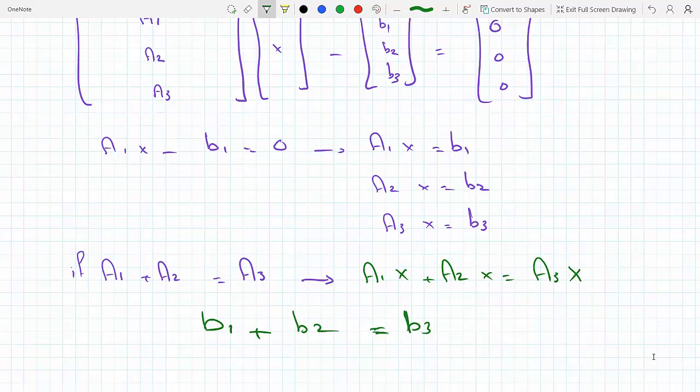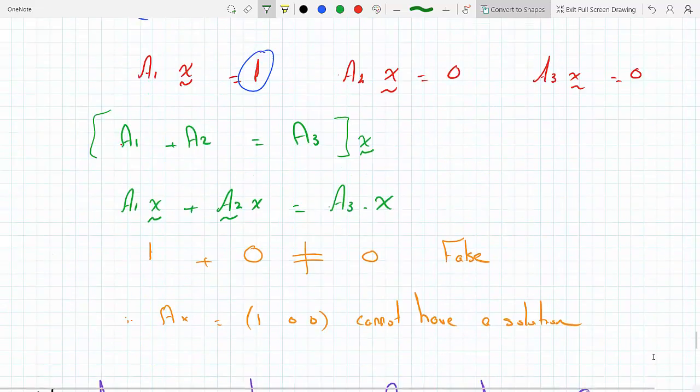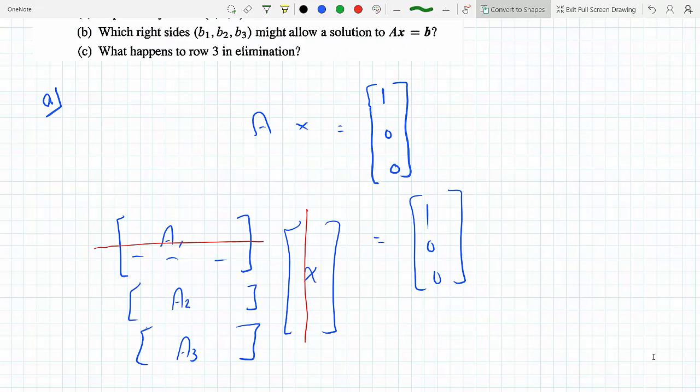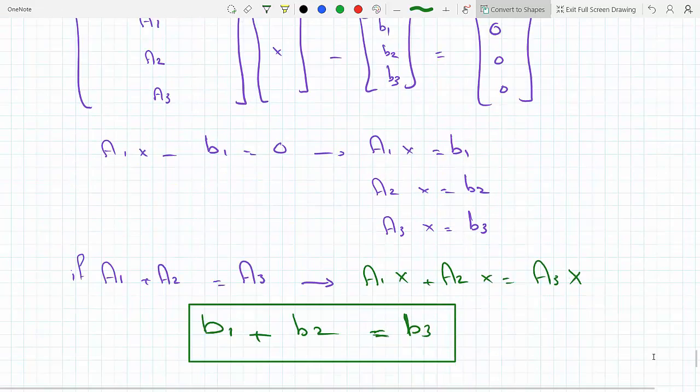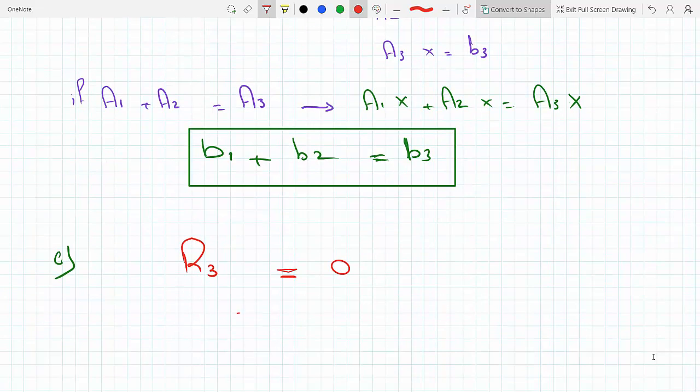And then in part c, it says what will happen to row 3 in elimination? Row 3 will be [0,0] when we eliminate. So that does it.